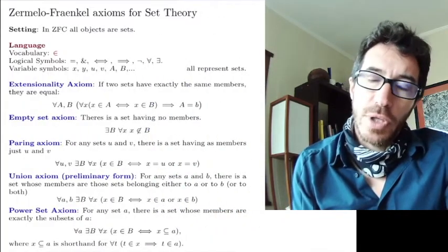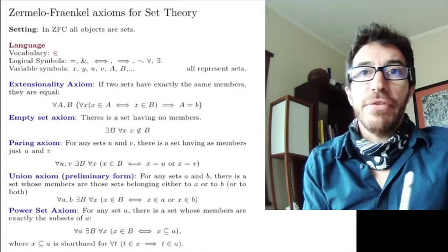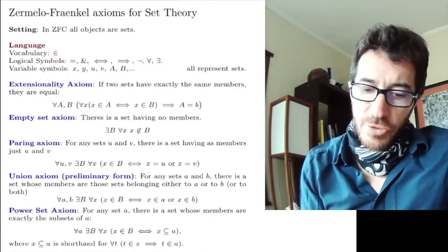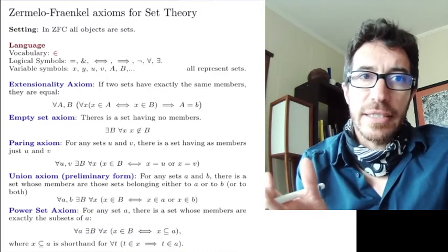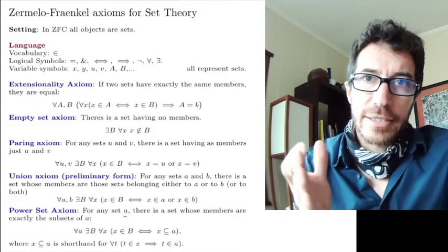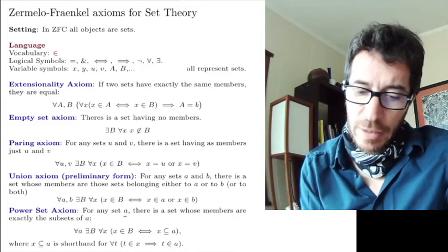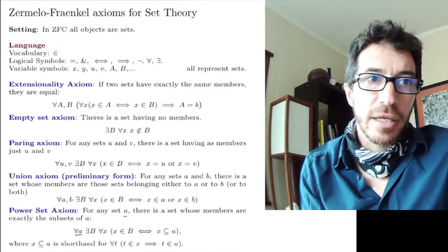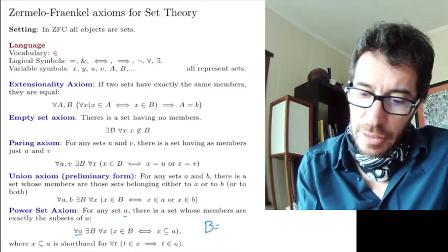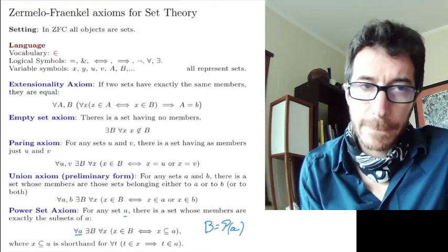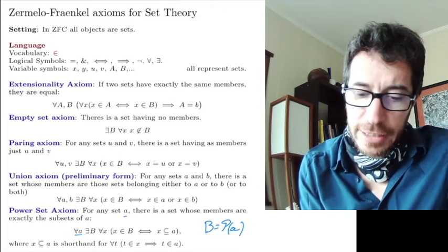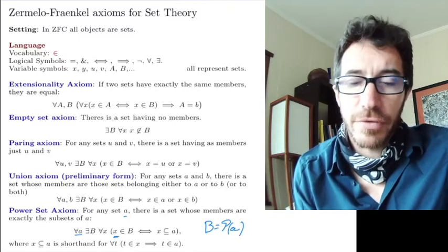And finally for today, there are more axioms coming later. The fifth axiom is going to be the power set axiom. Power set axiom says that for any set A, the power set of A exists. So for any set A, there is a set whose members are exactly the subsets of A. And the way we write that is given A, there is a set B which is going to be the power set. Let me write it down here. B is going to be the power set of A, such that the members of B are exactly the x's which are subsets of A.